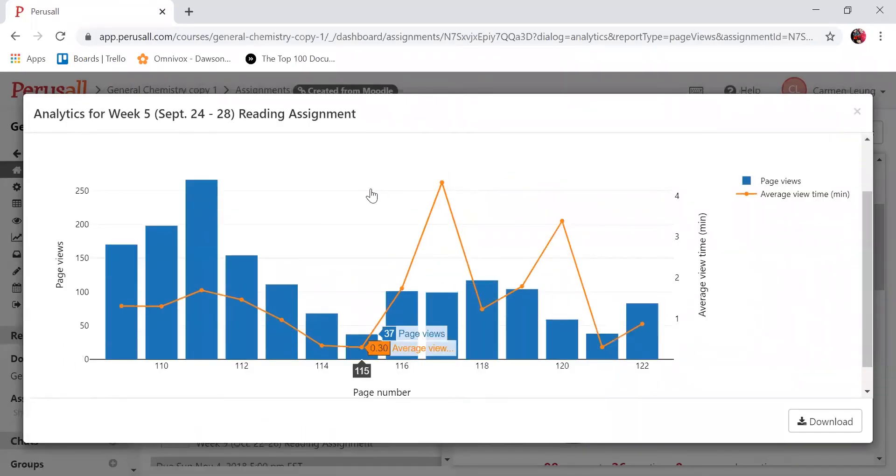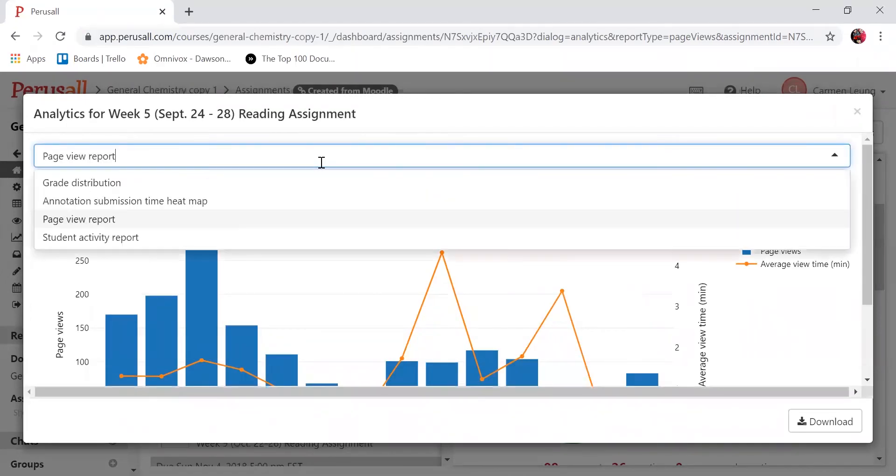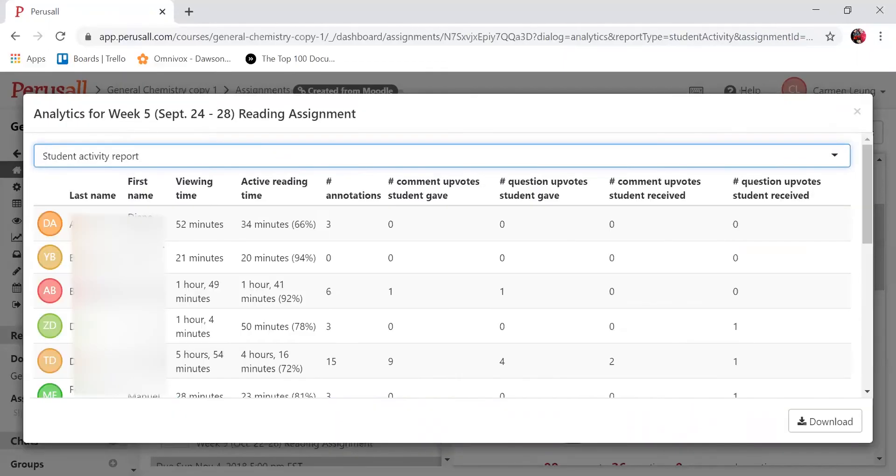You can see how many minutes a student spent on average for each page, so this way it's an indication of which topics the students might be more interested in. You also get a student activity report with the amount of time they spent doing the reading assignment and how many annotations they added.